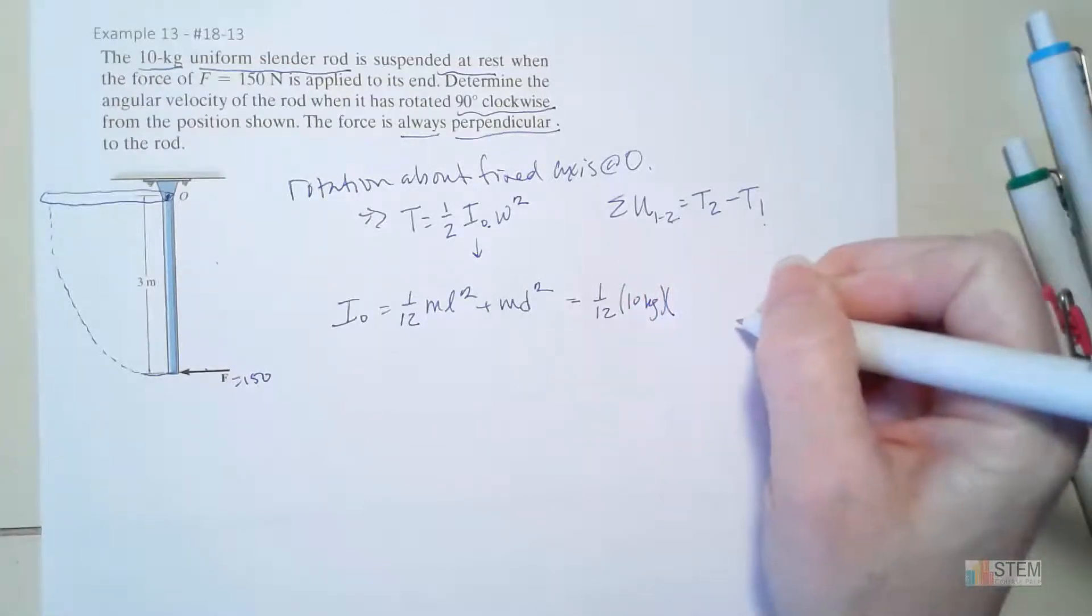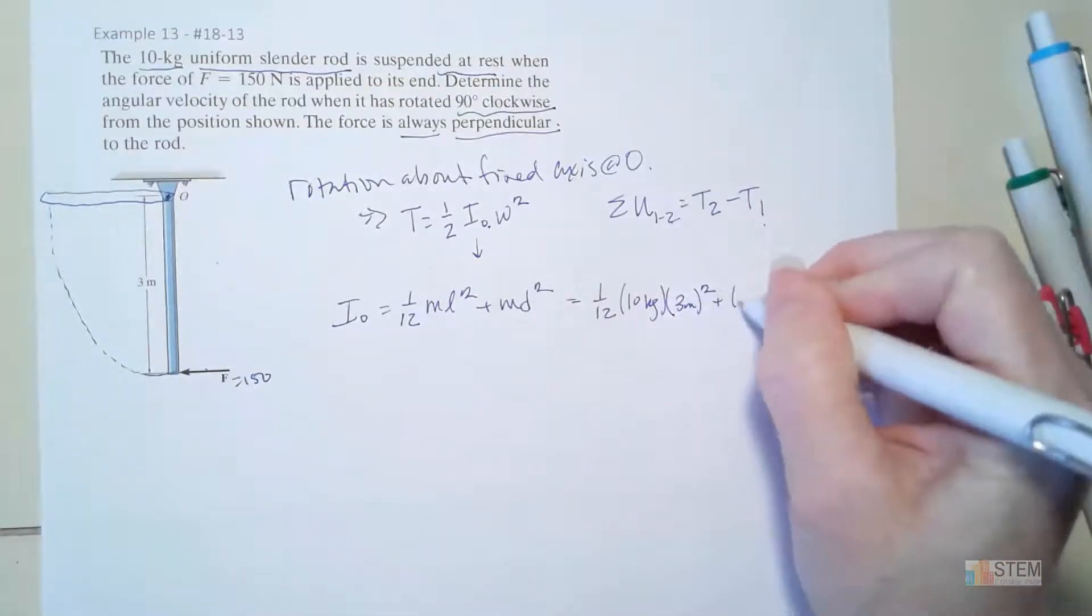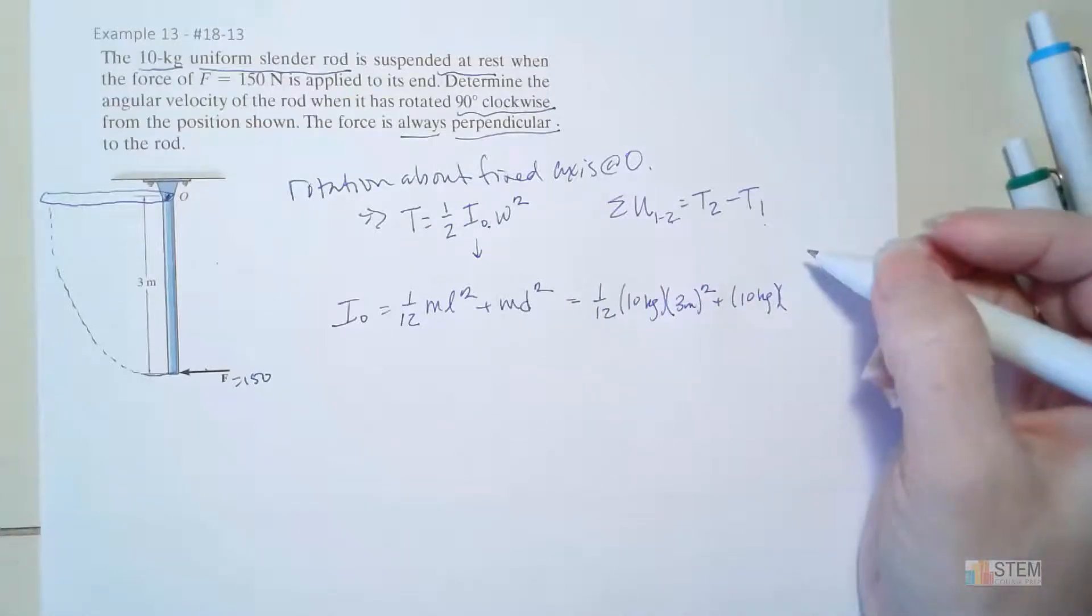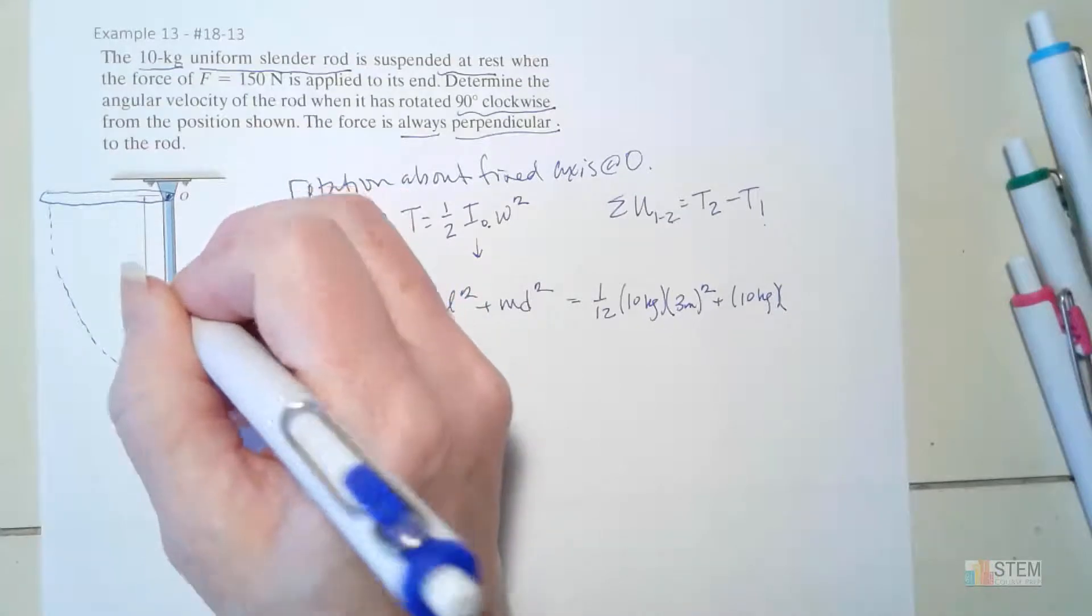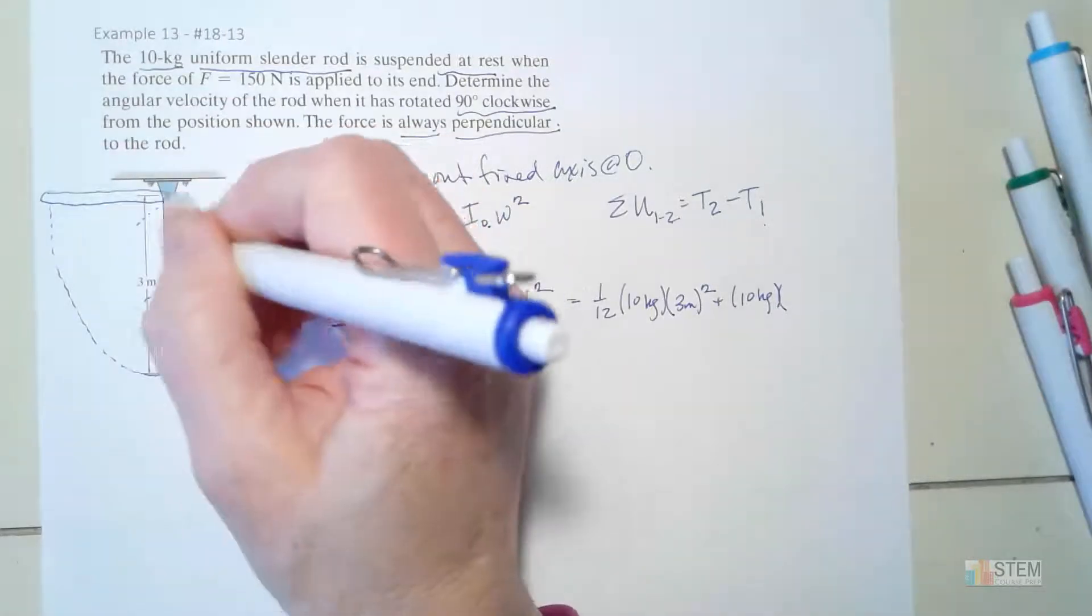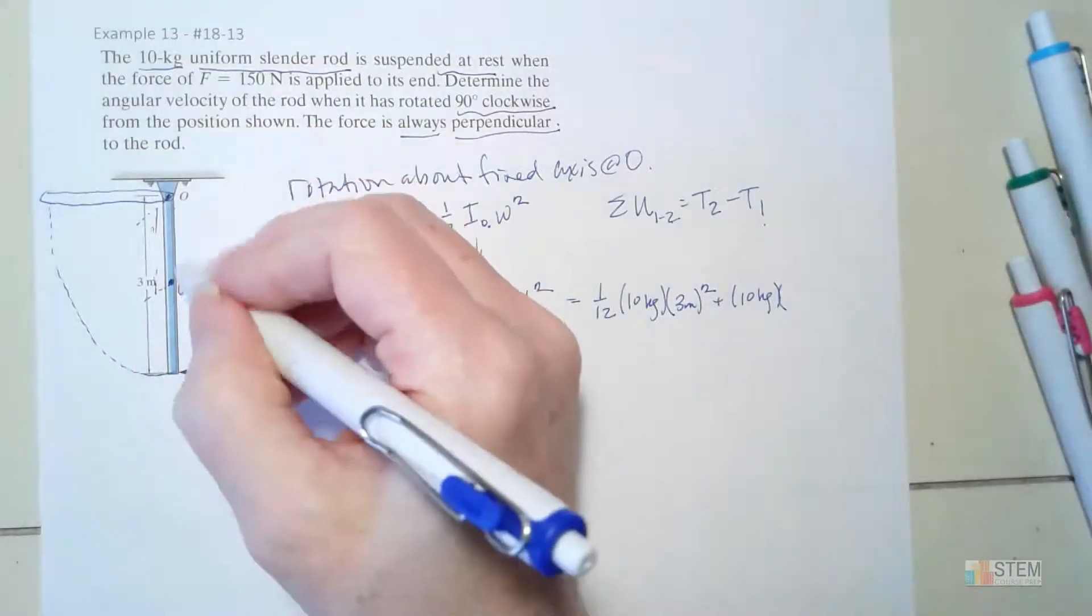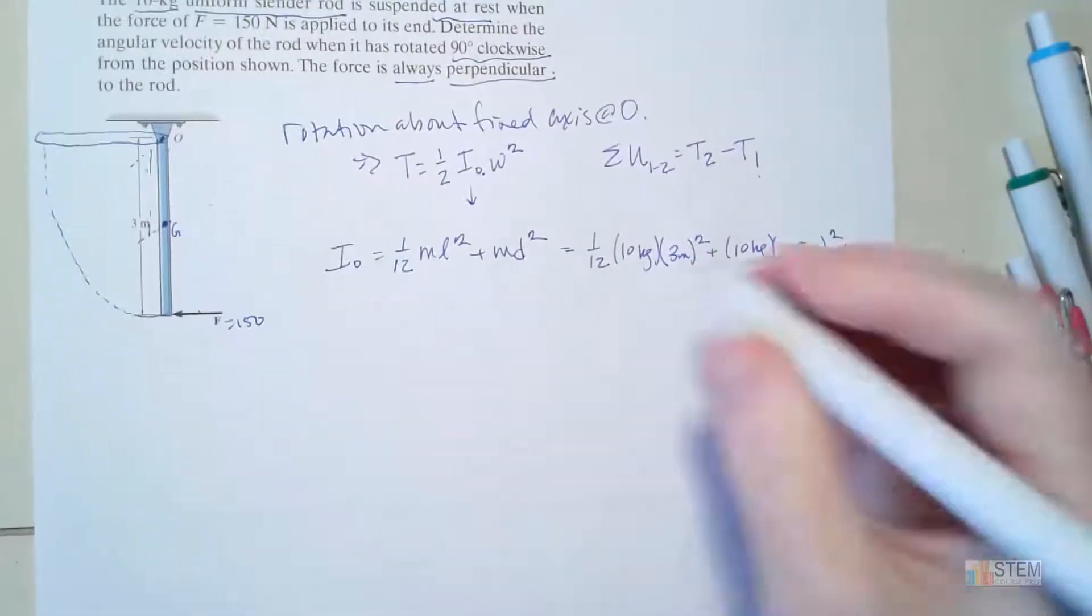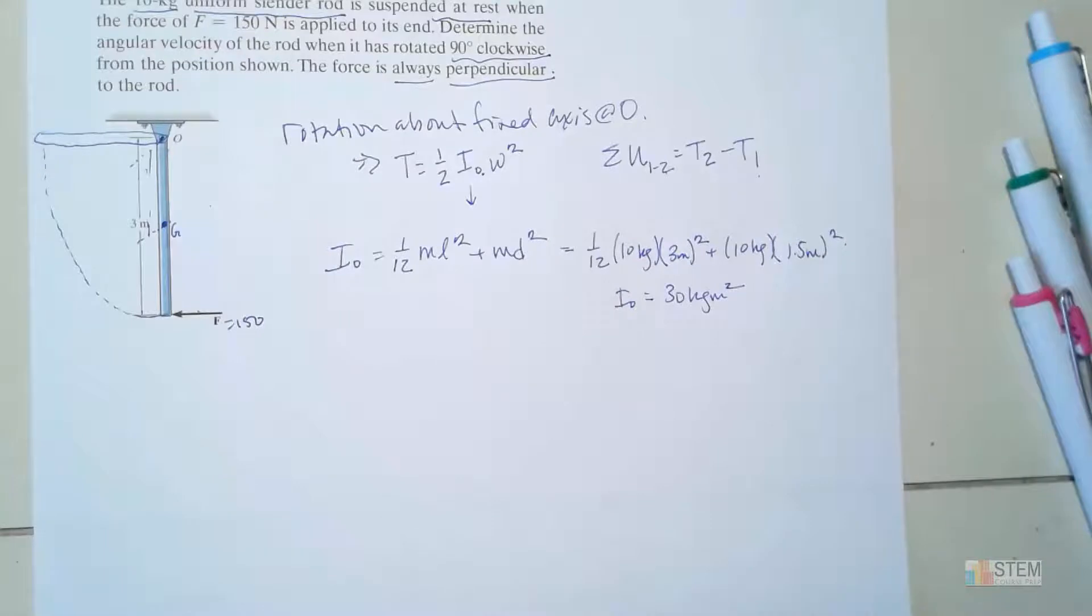So we've got 1/12 times 10 for the mass. What do we think length would be? It's going to be 3 meters. Square that, plus the mass again, which is 10. And then now we need D. So remember what D is in the parallel axis theorem. If I've got G right here, and I've got an axis coming out, and I've got the axis coming out of O, I want the distance between those two axes. So in this problem it's going to be 1.5, and then we square it. So I_O then is 30 kilogram meters squared.